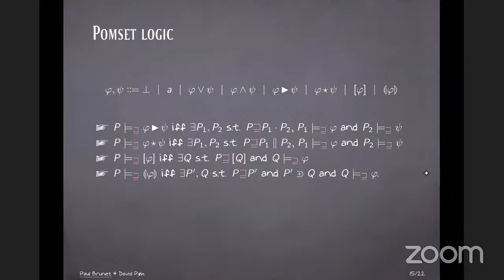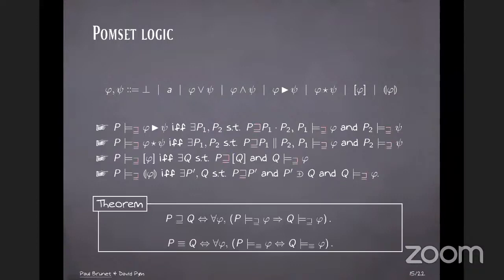Right. So as I said, the satisfaction relation is parametrized by the relation between Pomsets. And we have theorems, adequacy theorems like this saying that P subsumes Q if and only if every formula satisfied by P up to subsumption is also satisfied by Q up to subsumption. Something similar for isomorphism.